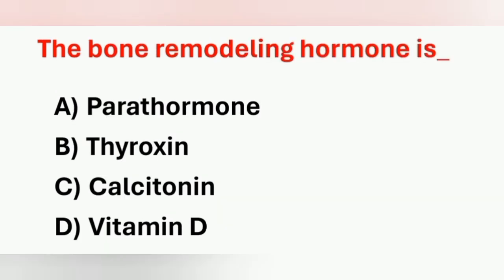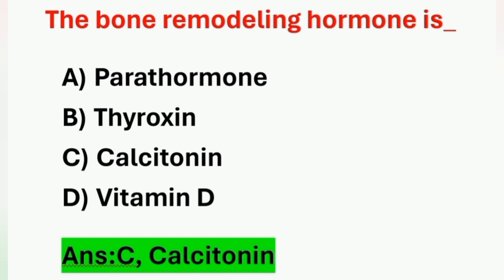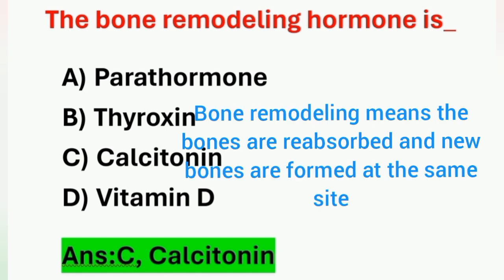Next question: the bone remodeling hormone is — option A: parathormone, option B: thyroxine, option C: calcitonin, option D: vitamin D. The correct answer is calcitonin, option C. Bone remodeling means bones are reabsorbed and new bones are formed at the same site, and this process is aided by calcitonin.